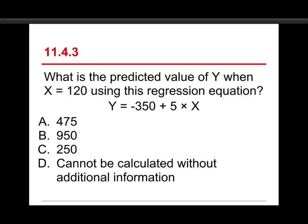Alright, number three. What's the predicted value of Y when X is equal to 120 using this equation? So Y equals minus 350 plus 5 times X. The choices are 475, 950, 250, or can't be determined without additional information. The answer is 250 and here's how you get it.